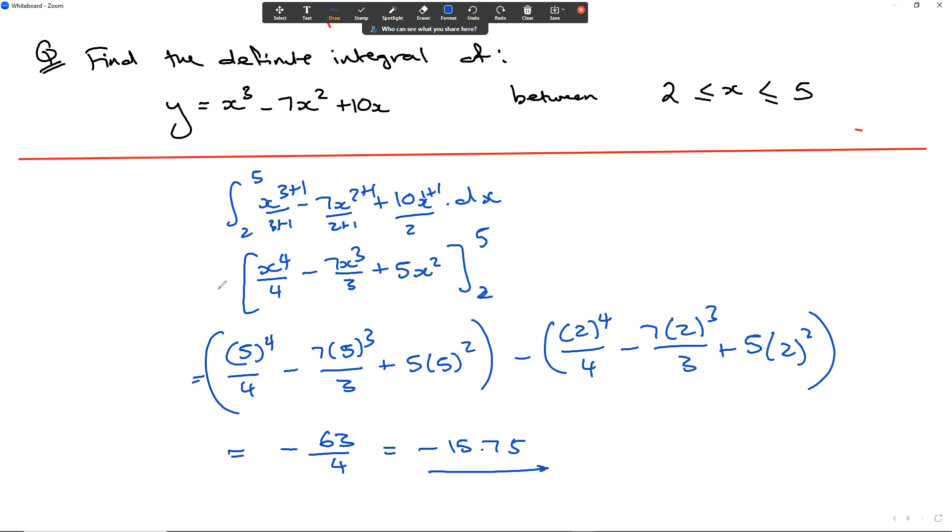Make sure you put your brackets in carefully. We haven't calculated the area under the curve; we found the sum of the areas which ends up as a negative value. If we have to find the area under the curve, we have to break it up into its x-intercepts first and then add the absolute values of the areas.